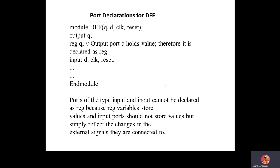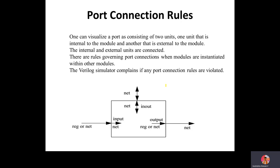Port connection rules define how to connect input, output, and inout ports. One can think of a port as consisting of two units: one internal to the module and one external to the module. The internal and external units are connected according to these rules. The Verilog simulator will complain if any port connection rules are violated. If the connection is not correctly specified, you will not get the output properly.